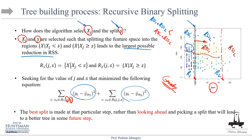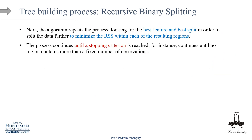XJ and S are selected such that splitting the feature space into regions R1 and R2 leads to the largest possible reduction in RSS. We find the optimal cutoff by moving it from left to right, recalculating RSS1 and RSS2 each time, and picking the minimum. The algorithm repeats, looking for the best features and splits to minimize RSS within each resulting region. The process continues until a stopping criterion is reached — without one, the model overfits.